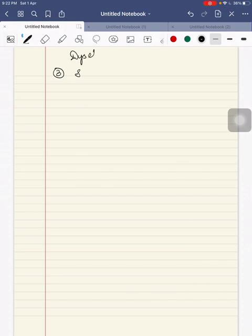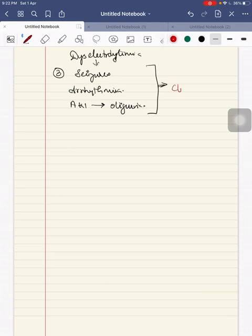This dyselectrolytemia can lead to seizures, arrhythmia and acute kidney injury leading to oliguria. This is termed as clinical tumor lysis syndrome. If it is diagnosed in the lab stage, it can be managed and the clinical consequence can be prevented if identified earlier.